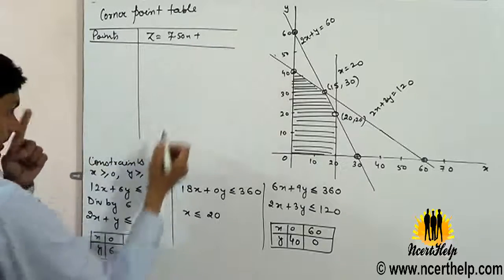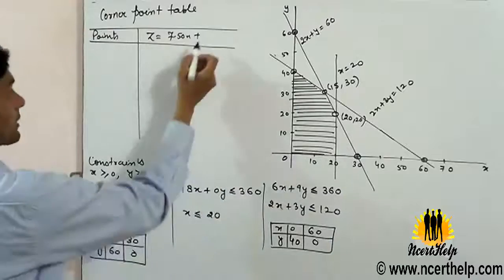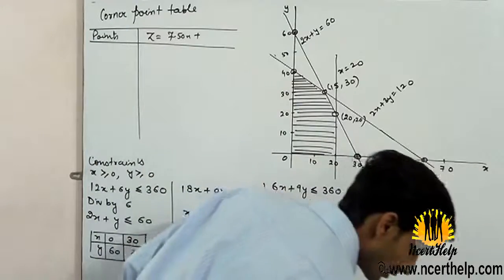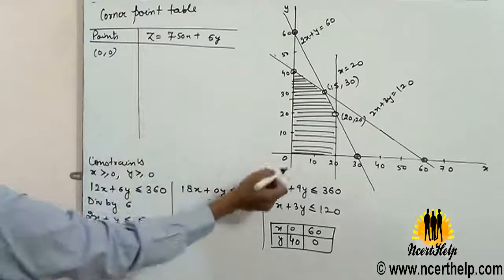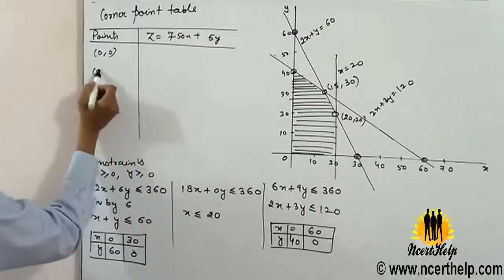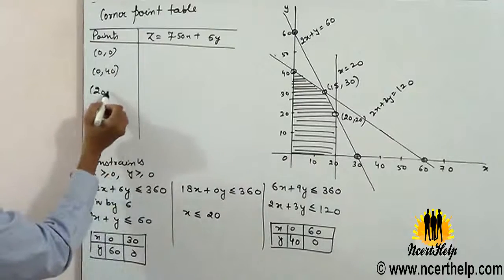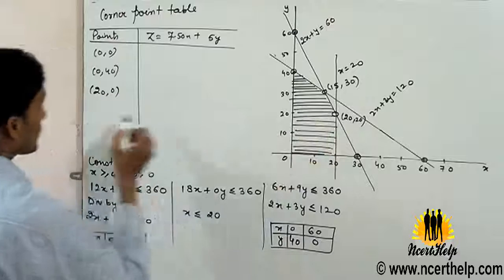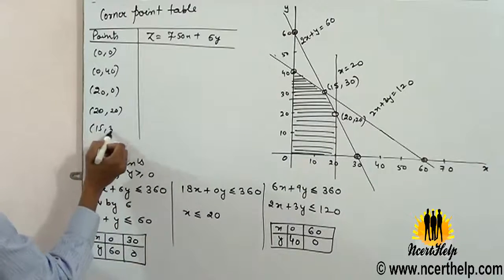Points: (15,30), (7.5,0), (0,0), (0,40), (20,0), (20,20), and (15,30).